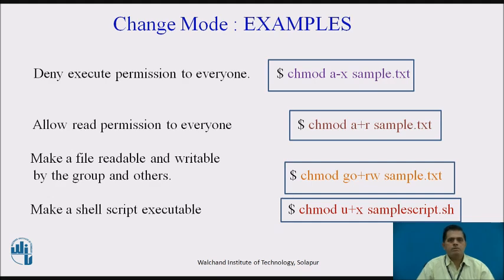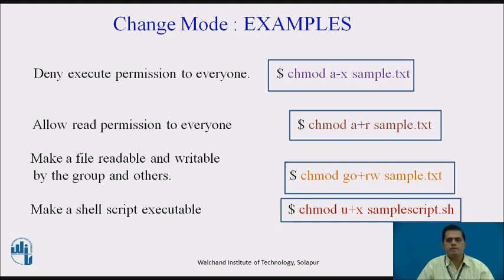Change mode examples: to deny execute permission to everyone, type chmod a-x sample.txt, where 'a' stands for all people and '-x' means deny execute permission. To allow read permission to everyone, type chmod a+r sample.txt, where '+r' indicates readable to all. To make the file readable and writable by the group and others, type chmod go+rw sample.txt, where 'go' stands for group and others. To make a shell script executable, type chmod u+x sample_script.sh, where 'u' stands for user and '+x' grants execute permission.